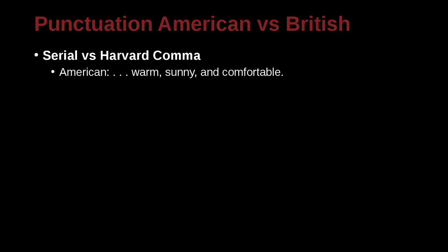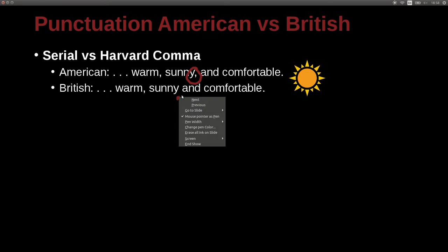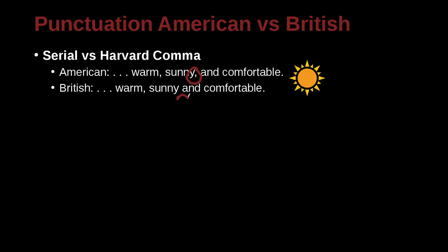Here we can see the American way, which is we have a list. For example: warm, sunny, and comfortable. You can see that we have the comma before the 'and' — right here. In the British style, we often just skip that; there's no comma in the last serial part. So in this class, we're going to emphasize the American approach, so we're going to always have that comma there.